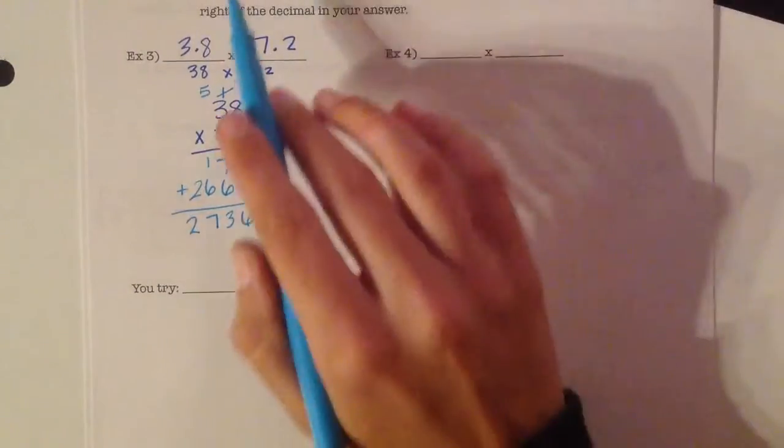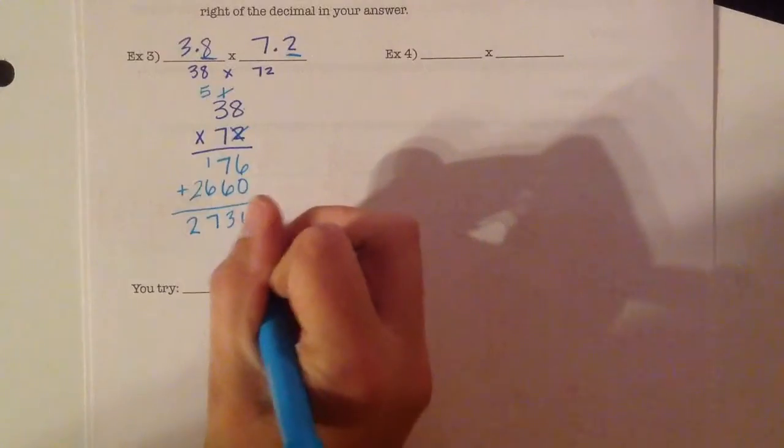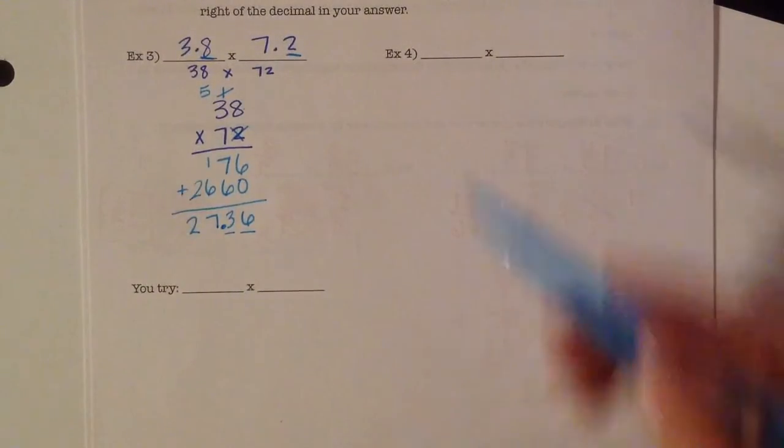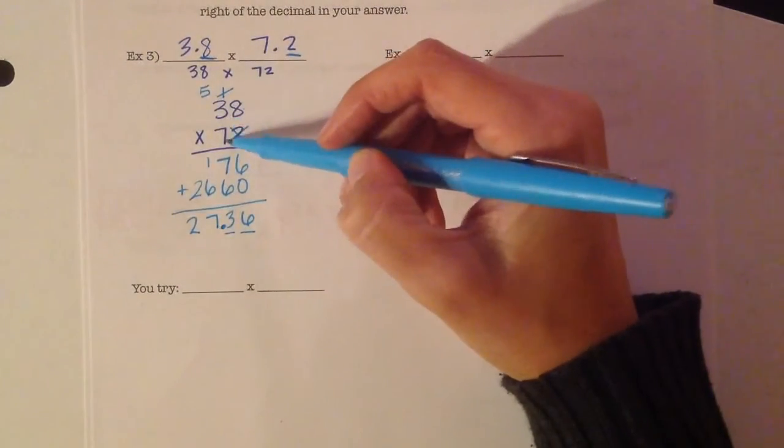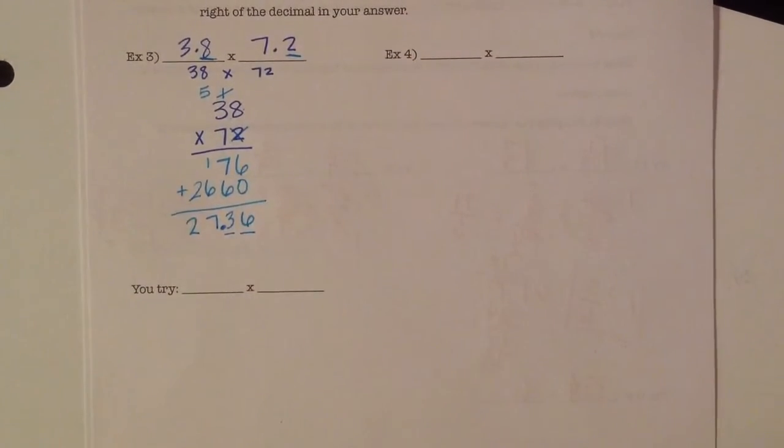But if we look at, we have to count the number of digits to the right of the decimal. So we've got one digit to the right, a second digit to the right. So that means I'm going to have two digits to the right of the decimal in my answer. Which, this makes sense. That's really close to 28. The mistake people make is they put their decimals in their answer and carry it down and think that it's 273 and 6 tenths.